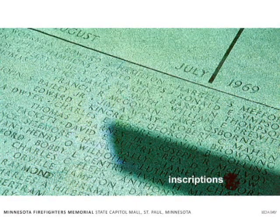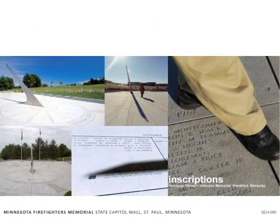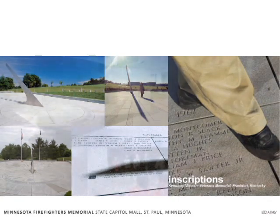A word about inscriptions and all the various ways that inscriptions take place. The Kentucky Vietnam Veterans Memorial in Frankfort, Kentucky — in the upper left you'll see the sundial, and in the middle you'll see the inscriptions. Once a year, on the date that the soldier fell in combat, the shadow of the sundial actually goes over their name. So it's another very powerful way that inscriptions can be used.